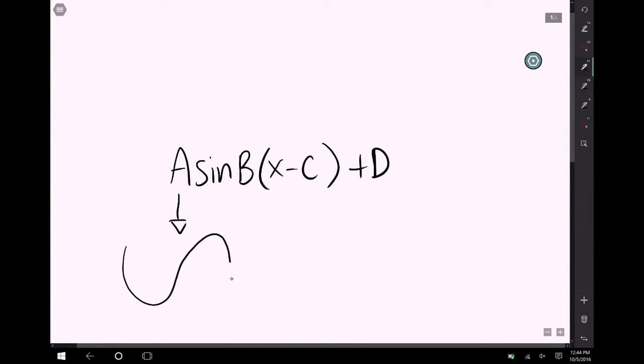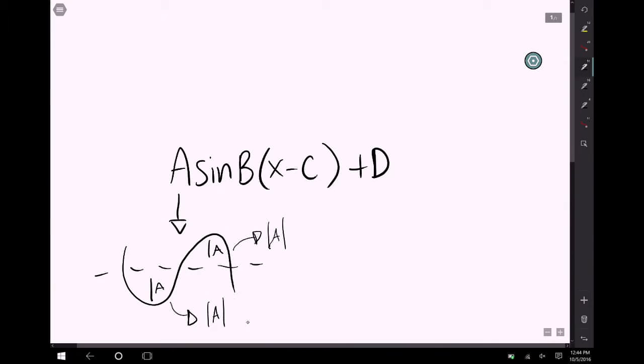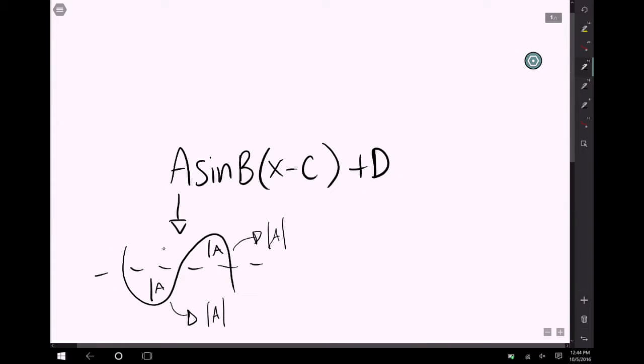A stands for amplitude, which will be measured by the distance between the mid-axis and the top of the arc here. It will always be positive because A measures a distance. So no matter if it is above or below the mid-axis or the x-axis, it will always be positive, making it absolute value of A at all times.